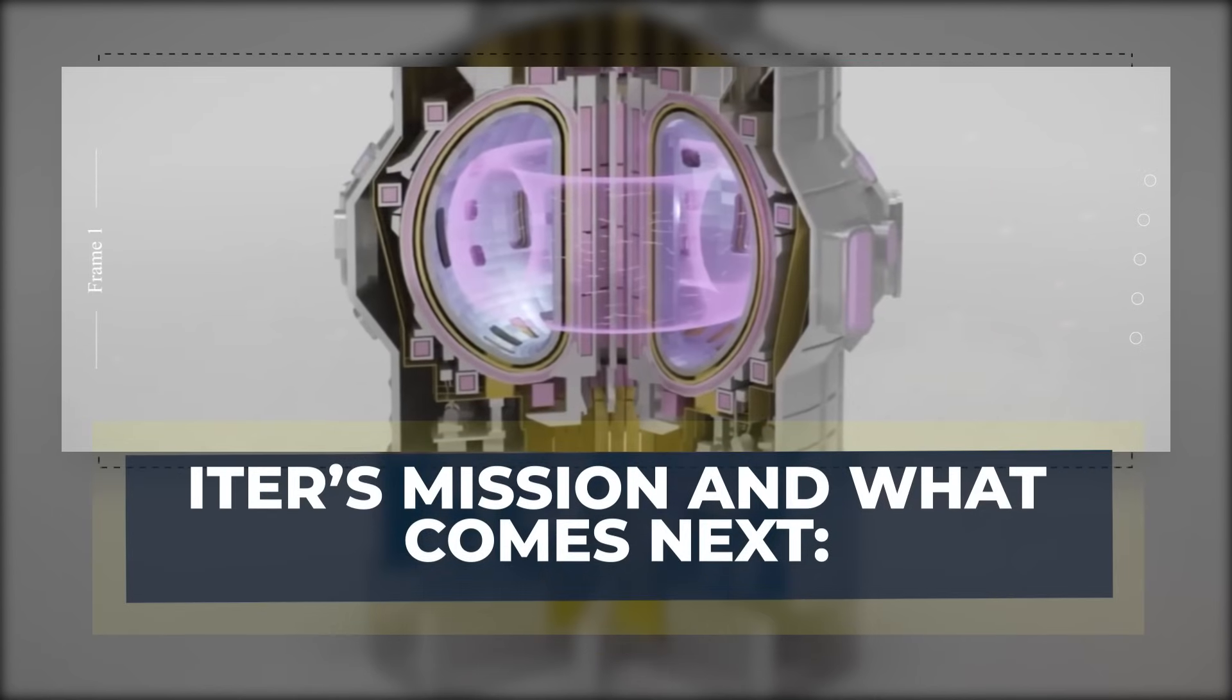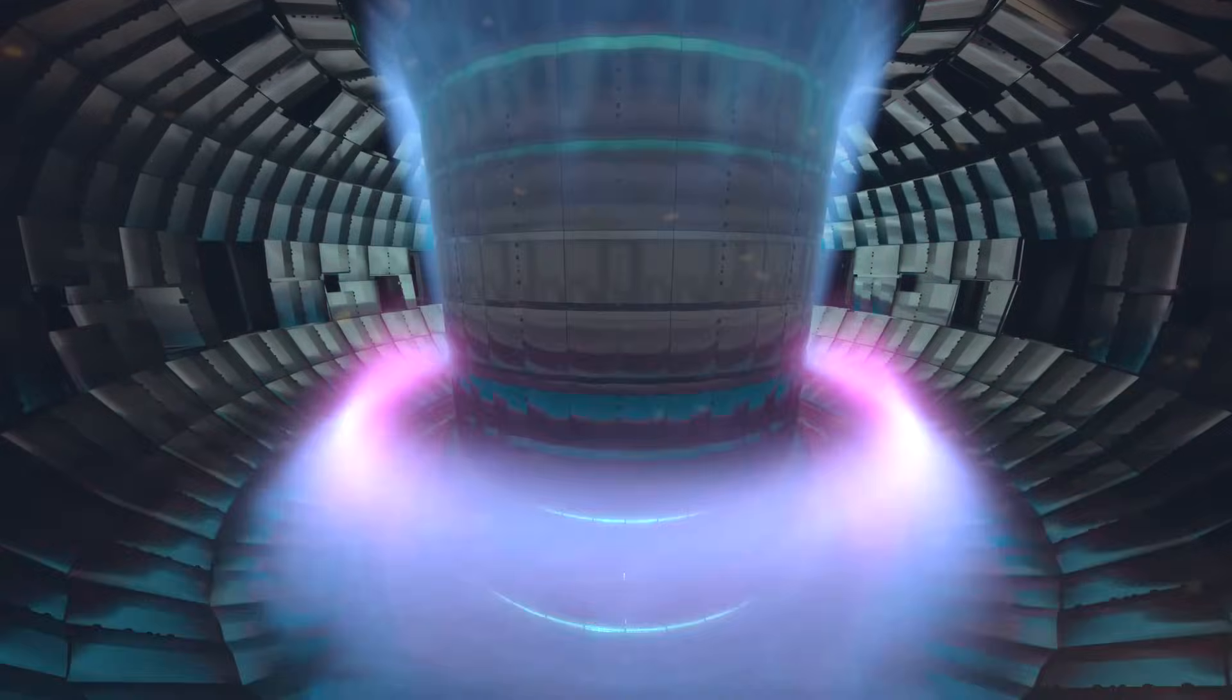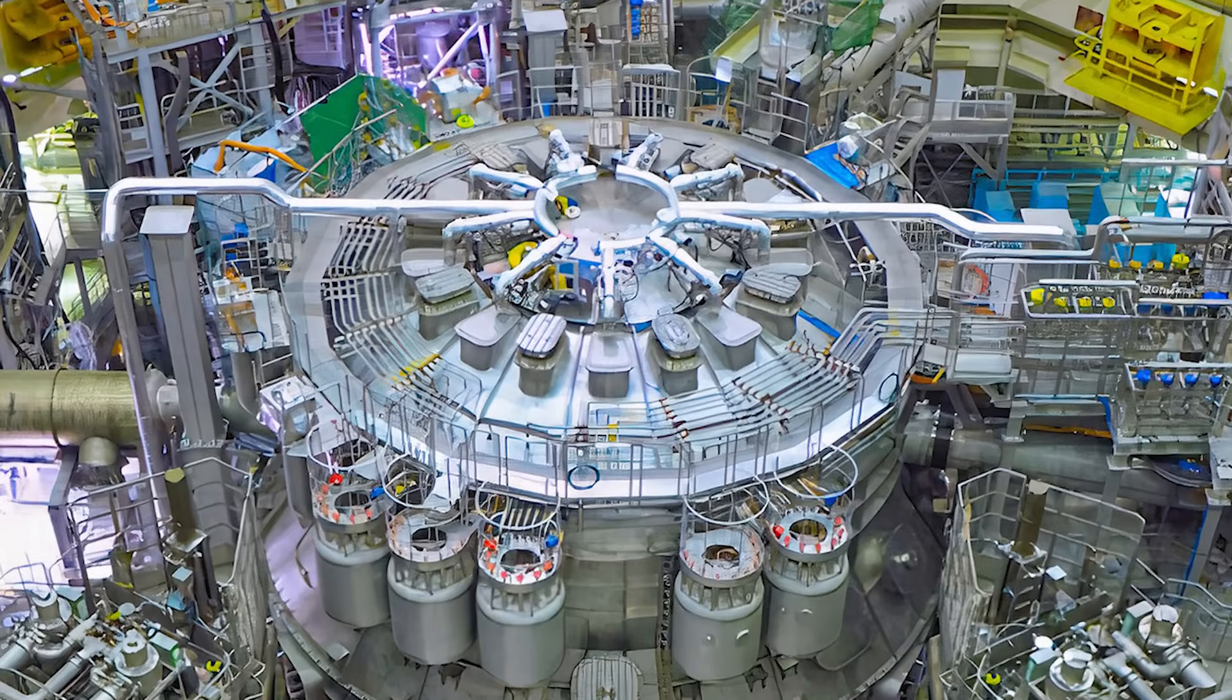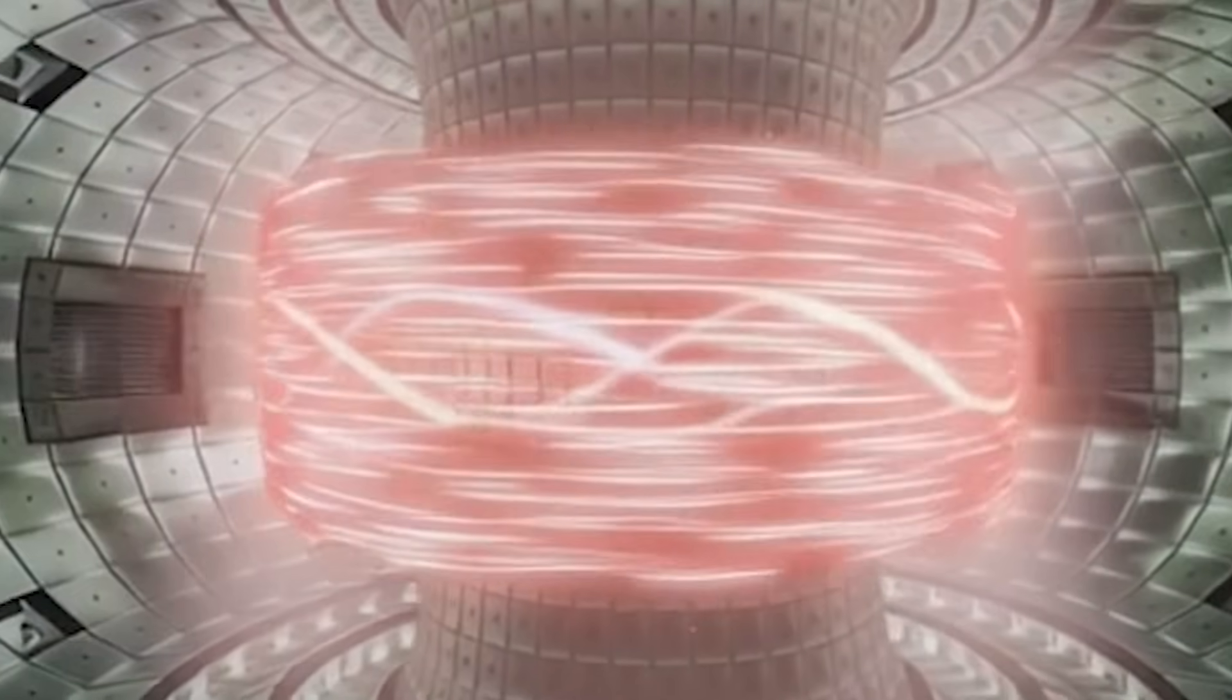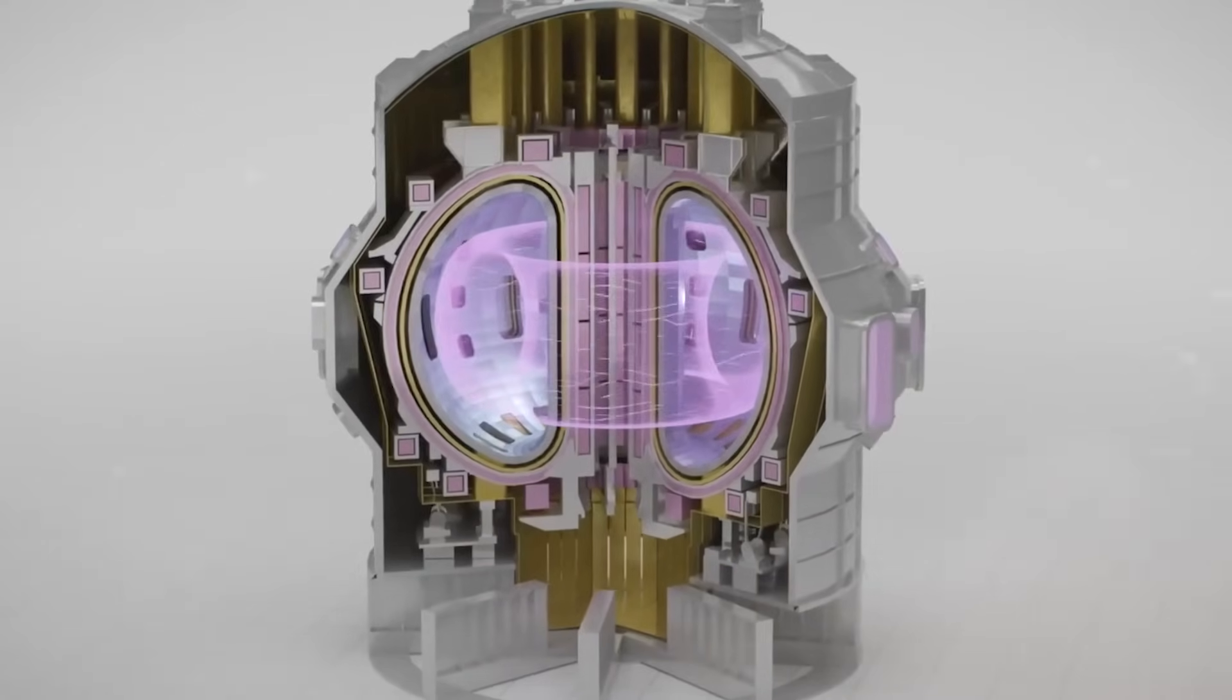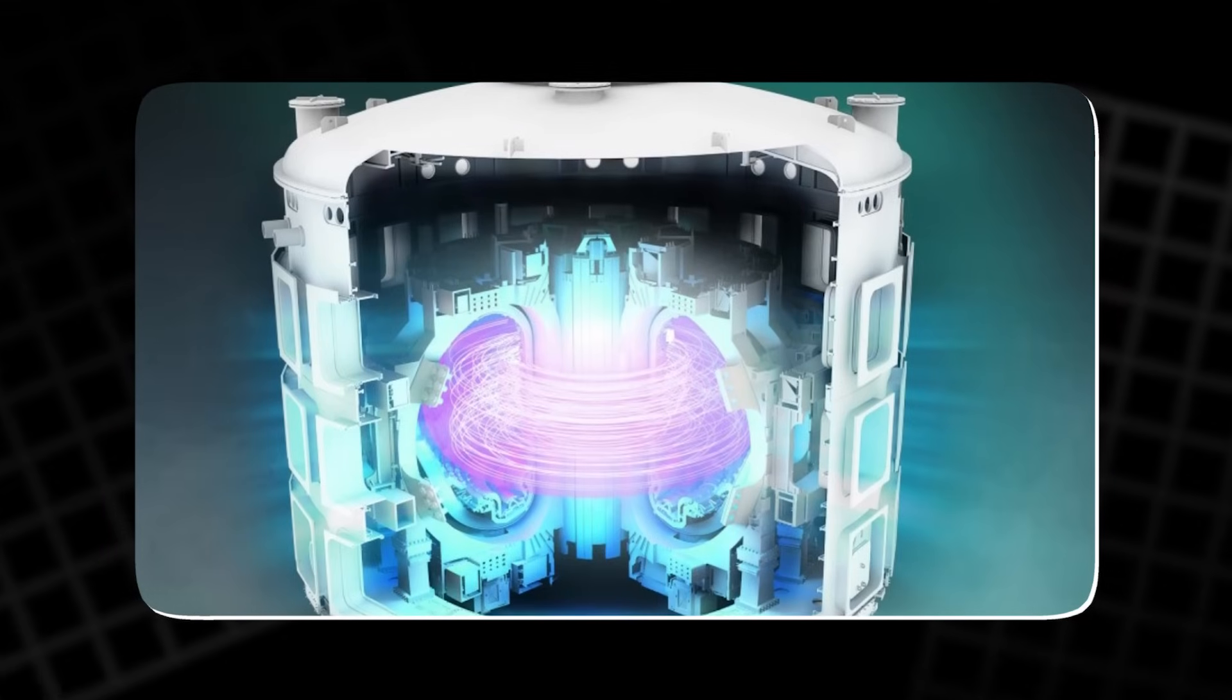It's important to remember that ITER itself isn't designed to power our homes. Its mission is proof of concept, to show that sustained, controlled fusion is possible. The tokamak being built in southern France is an enormous donut-shaped chamber, capable of holding plasma heated to more than 150 million degrees Celsius. At that temperature, any physical wall would vaporize instantly, which is why ITER relies on its powerful magnetic cage. The central solenoid sits at the core of this system, driving the current that keeps plasma circulating and stable.